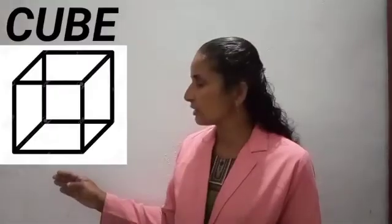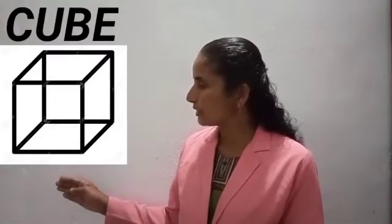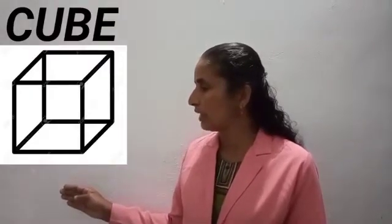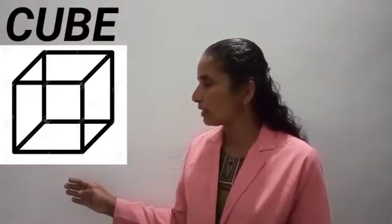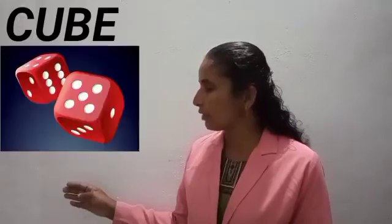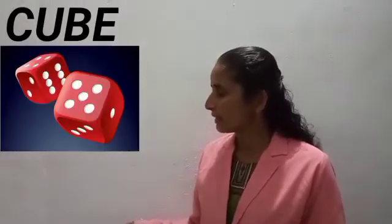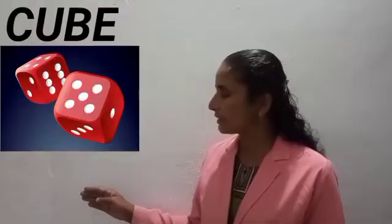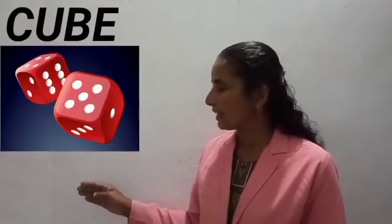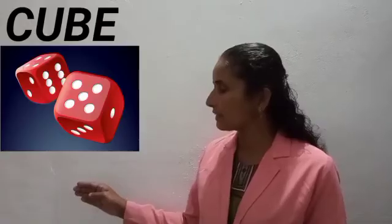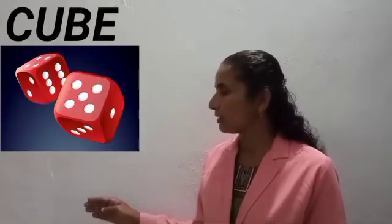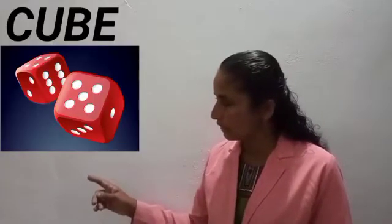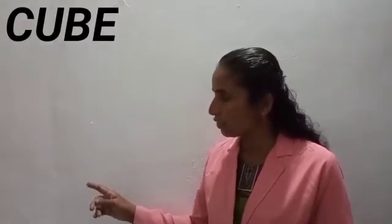This is a cube. C-U-B-E, cube. Let us see one example for cube. There is a dice — you are playing with dice. A dice is shaped like a cube. What is the spelling of cube? C-U-B-E, cube.